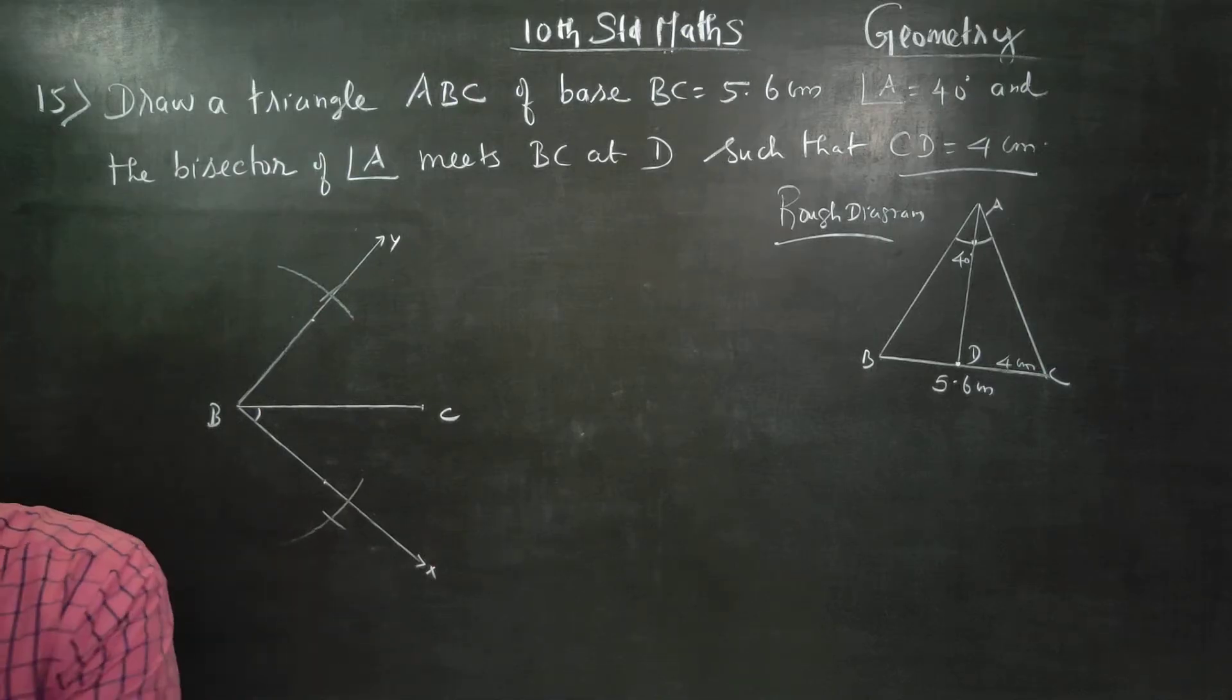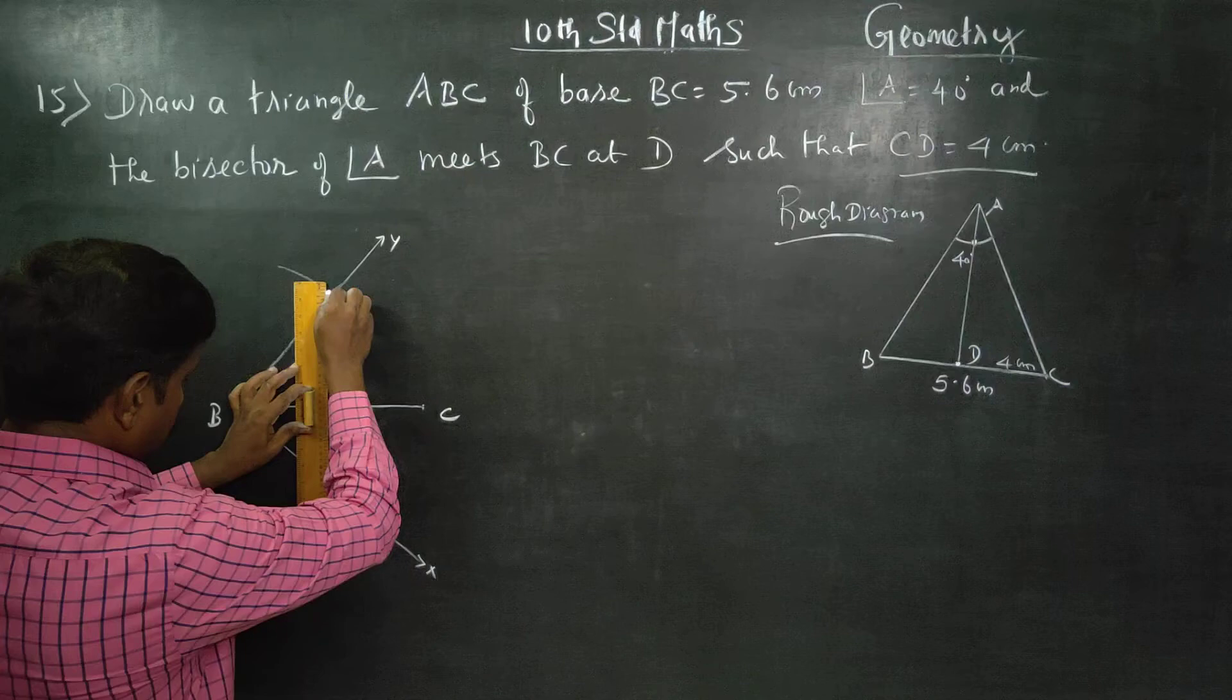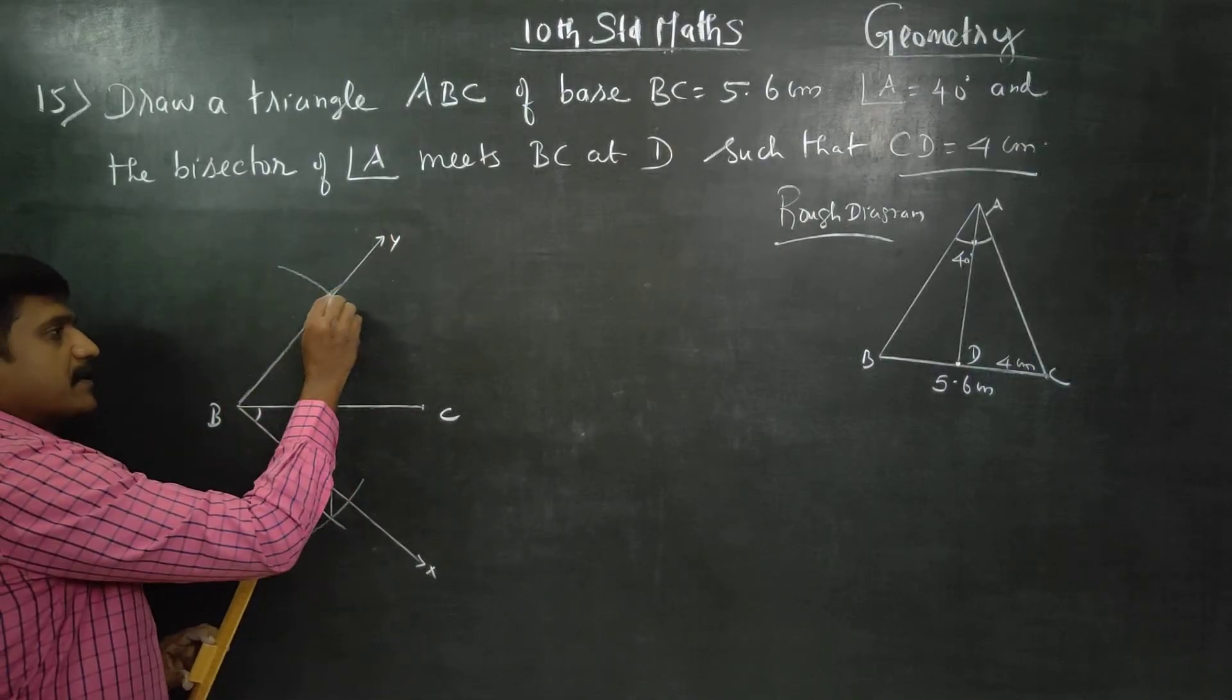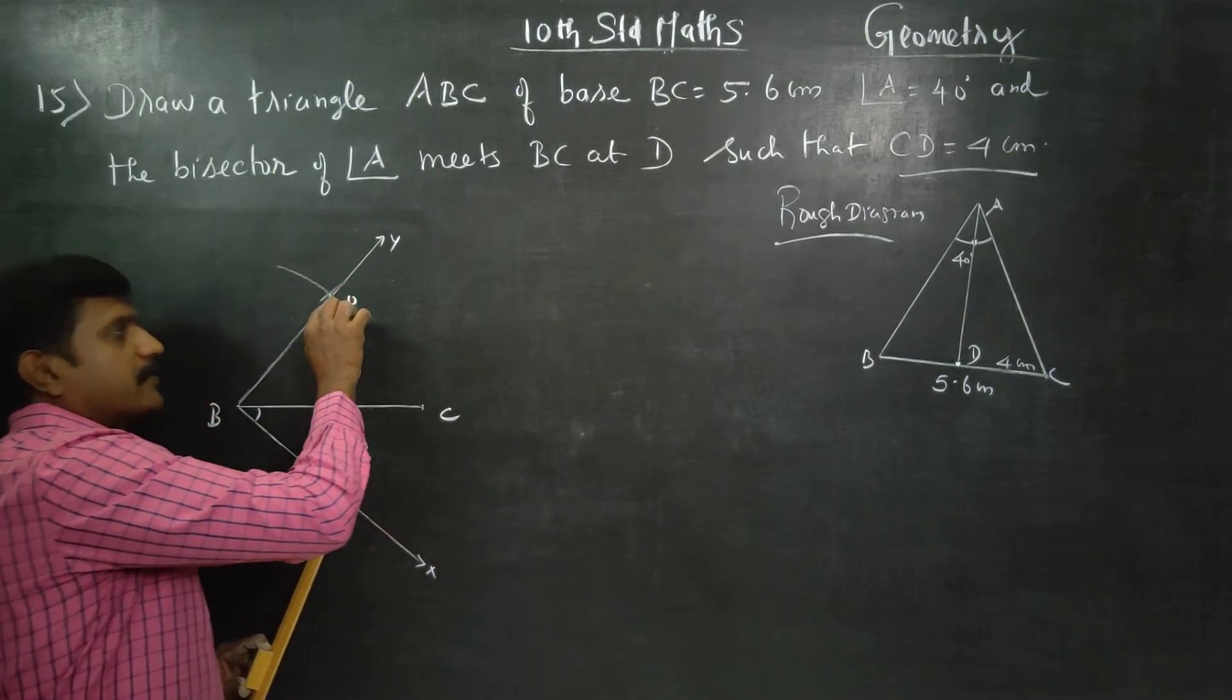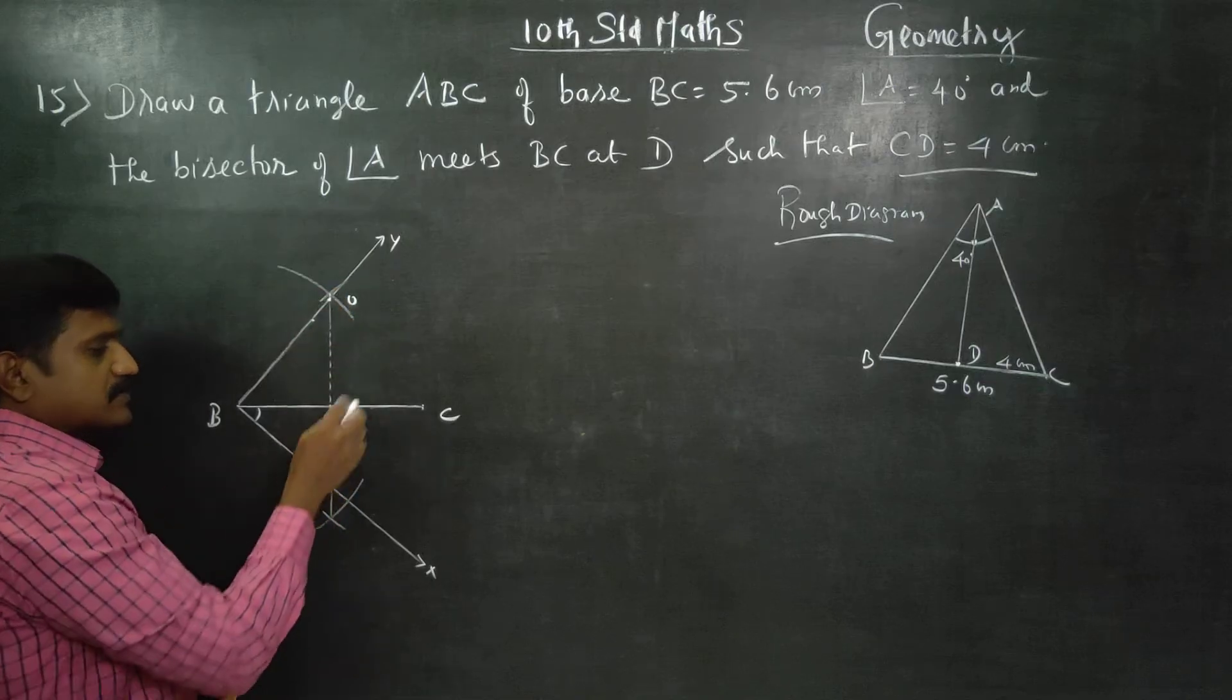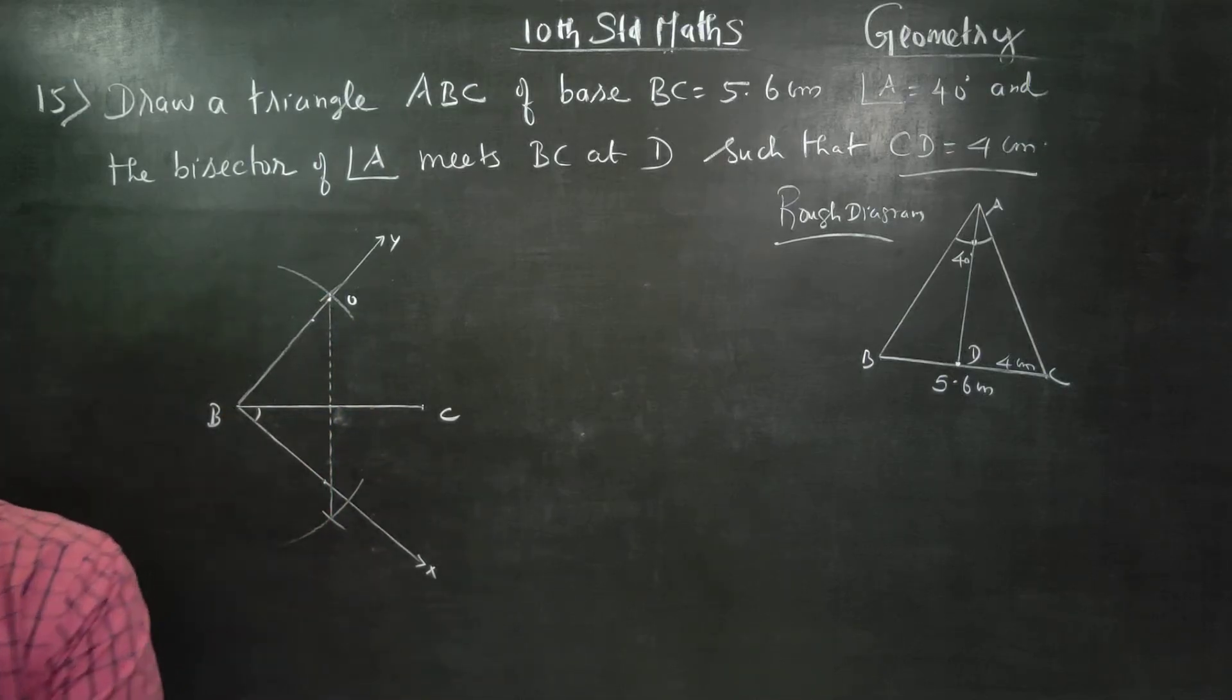Now perpendicular bisectors. Draw a circle. This is B, Y. This is O. This is perpendicular bisectors. This is O. You can draw a circle.